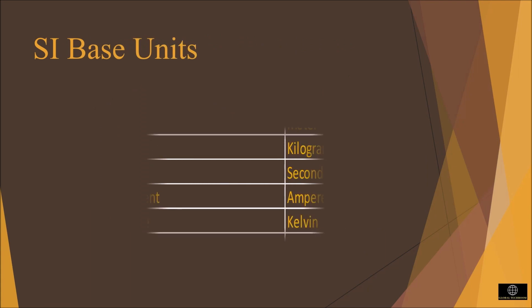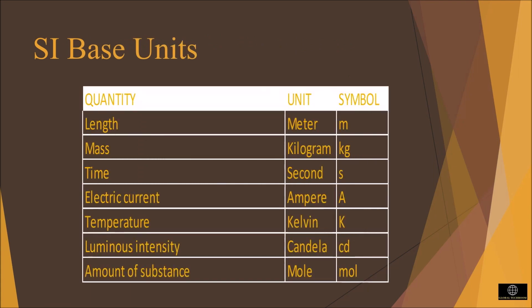The seven base units are mentioned here. The quantities are: length, mass, time, electric current, temperature, luminous intensity, and amount of substance. The corresponding units and symbols are given here.